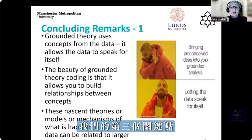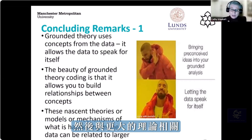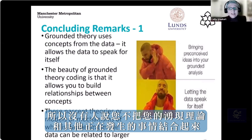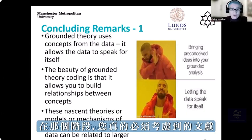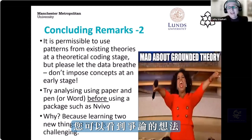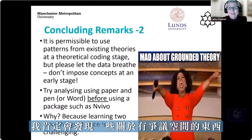Those nascent theories or models — like the one I've just shown you — are then related to larger theories, which is why abstraction is important. No one is saying that you don't grapple your emergent theory with what else is going on; not to do so would be unscholarly. You really do have to take account of the literature at that stage. It is permissible to use patterns from existing theories at the theoretical coding stage — for example, the idea of contestation, I'm sure I would find something about contested space in the literature.